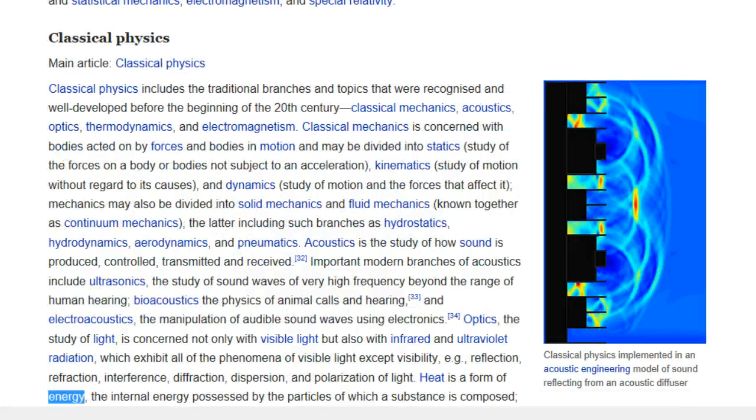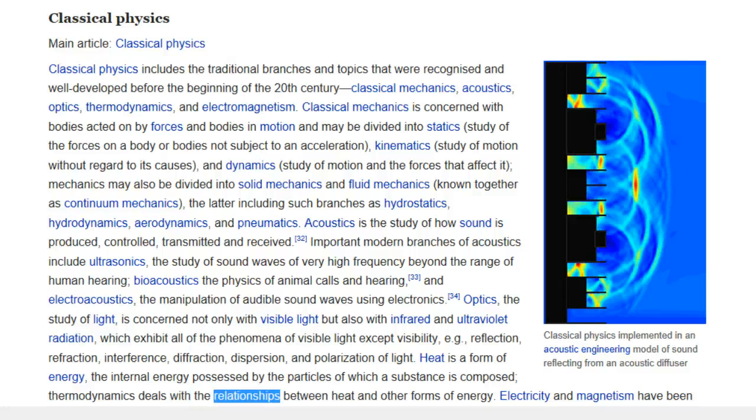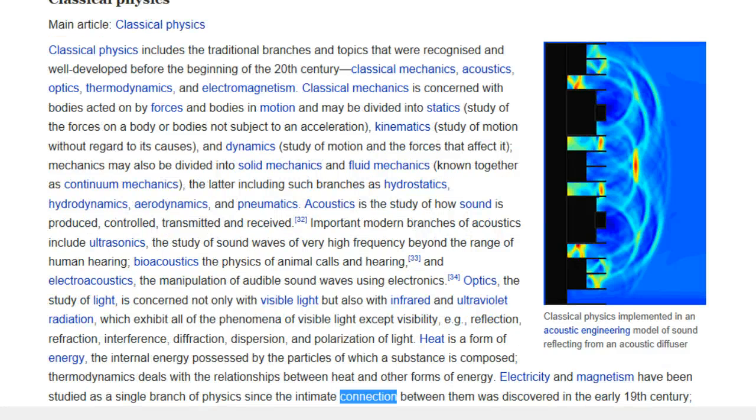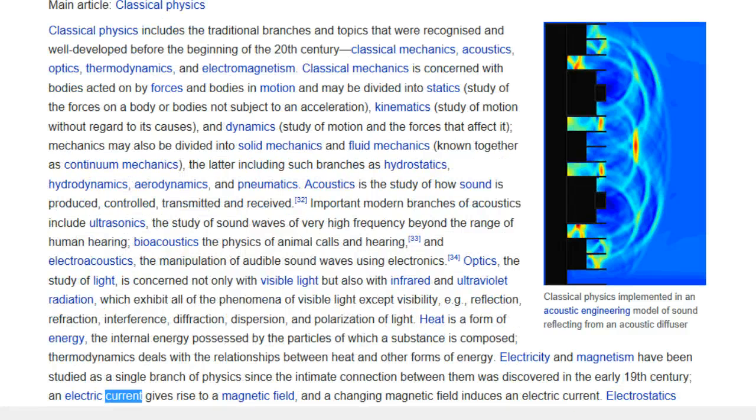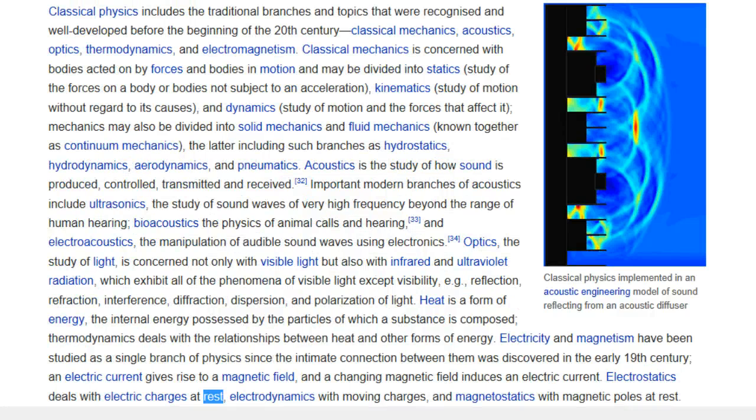Heat is a form of energy, the internal energy possessed by the particles of which a substance is composed. Thermodynamics deals with the relationships between heat and other forms of energy. Electricity and magnetism have been studied as a single branch of physics since the intimate connection between them was discovered in the early 19th century. An electric current gives rise to a magnetic field, and a changing magnetic field induces an electric current. Electrostatics deals with electric charges at rest, electrodynamics with moving charges, and magnetostatics with magnetic poles at rest.